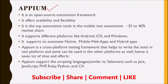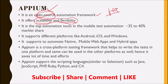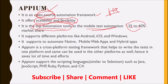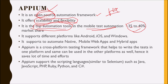APM Mobile App Automation Tool is an open source automation framework which is free of cost. You need not pay any money because it is an open source tool, and it offers great scalability and flexibility. It is a top automation tool in the mobile test automation space, capturing almost 35 to 40 percent of the market share.